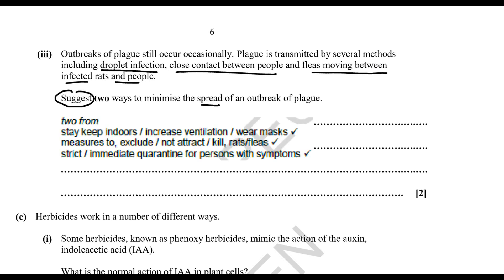The answers they were looking for were: keep indoors, which minimizes close contact between people; increase ventilation or wear masks, because transmission is by droplet infection; measures to exclude or kill rats or fleas; and quarantining people with symptoms.